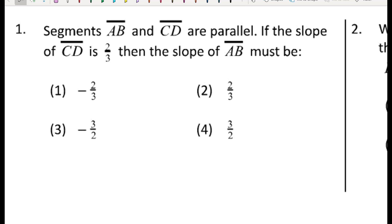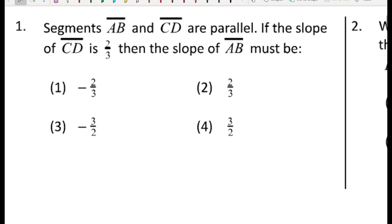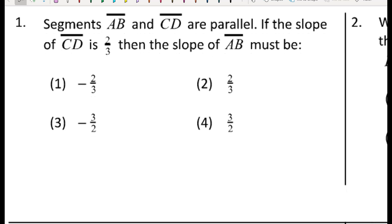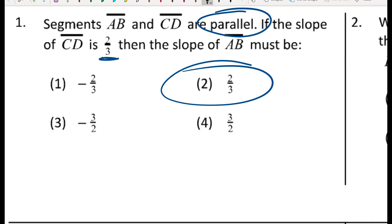In this video I'm going to go through Review Two for the coordinate geometry unit. For number one, segments AB and CD are parallel — remember that means they've got the same slope. So if CD has a slope of two-thirds, then the slope of AB must also be two-thirds because parallel lines have the same slopes.